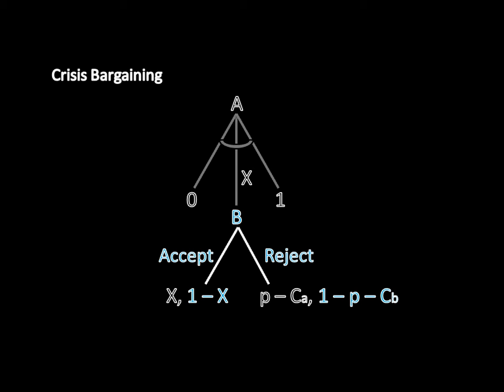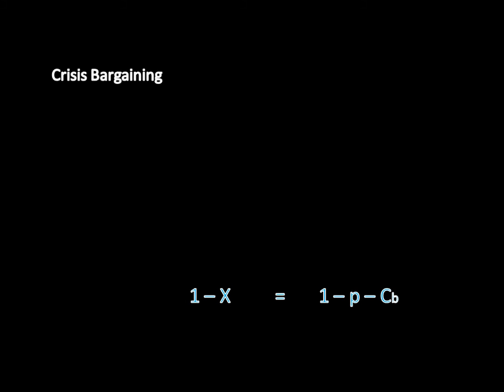So let's assume that 1 minus X equals 1 minus P minus CB. We can simplify that equation and solve for X, which yields P plus CB. Thus, it looks like A is going to offer P plus CB, or X is going to equal P plus CB.